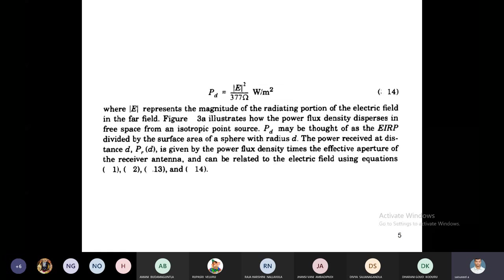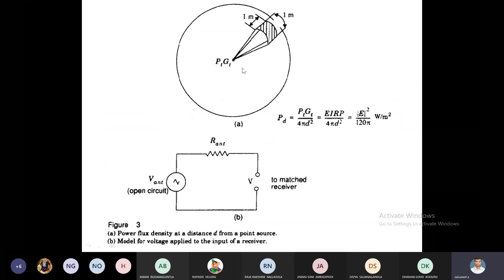Suppose we have to assume that pd, power flux density, may be thought as the EIRP divided by surface area of a sphere with a radius D. With a radius D, nothing but see this one. This is about first picture.